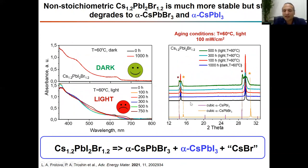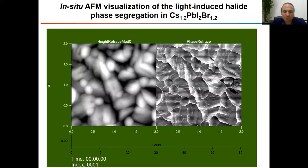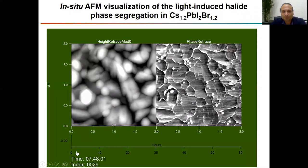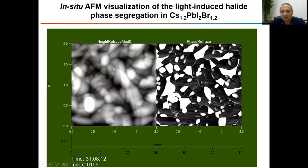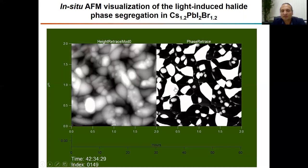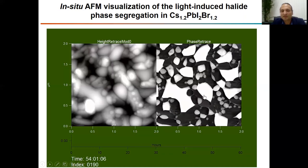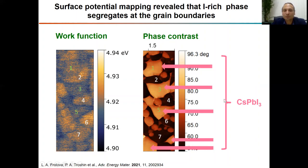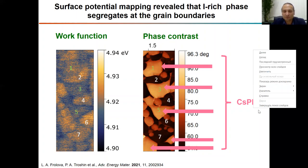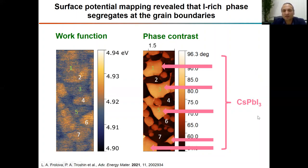These two phases of cesium lead iodide have very different electronic properties and also different work functions, which helped us to analyze the in-situ atomic force microscopy data. Under continuous light exposure, a new phase appears at the grain boundaries and grows with time — this is what happens after 60 hours of continuous illumination. We used Kelvin probe microscopy to analyze the work function of these new domains, and we revealed that they correspond to cesium lead iodide — formed as the black perovskite phase in one case and as the yellow orthorhombic phase in the other.